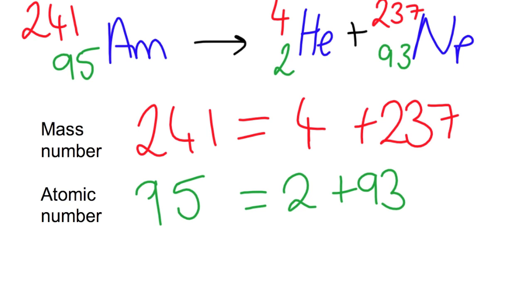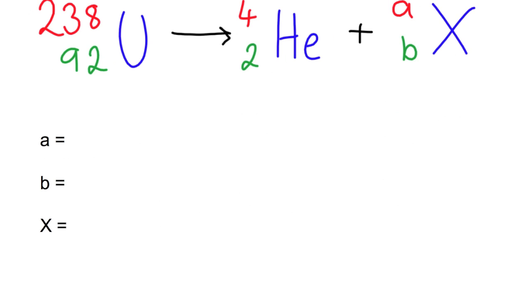We're going to move on now and have a look at an actual example that you may get asked to fill in. So here we have uranium, and it is decaying by alpha decay to give us this nuclide notation here on the right hand side. So we're going to take it from each step. So first of all we're going to work out what the mass number is, then we're going to work out the atomic number and use that to work out what the element itself is.